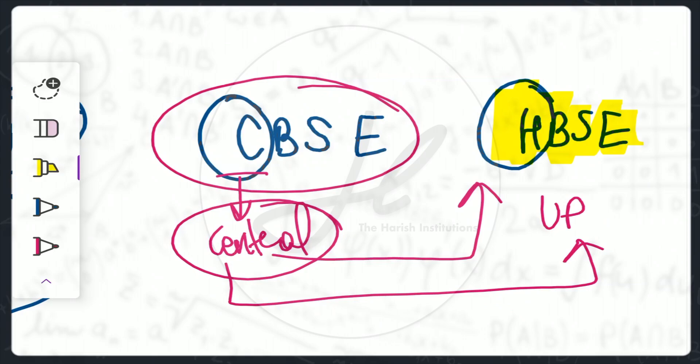If you talk about the central board, every state's CBSE school will follow the same rules and regulations. The rules and regulations are set by the CBSE team, or the central government. So both state and central roles are given — this is the concurrent status.